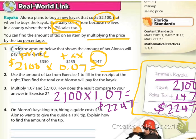Number four says on Alonzo's kayaking trip, hiring a guide costs $50 and Alonzo wants to give the guide a 10% tip. Explain how to find the tip. So now we have that we are spending $50, but we need to pay tip for this guide. And so it's a 10% tip. How much will that be? Think about that. Pause the video. Alright, hopefully you figured that you're going to take that $50 and you're going to multiply it times .10 or just .1 would be fine. And that you're going to end up paying $5 for the tip.